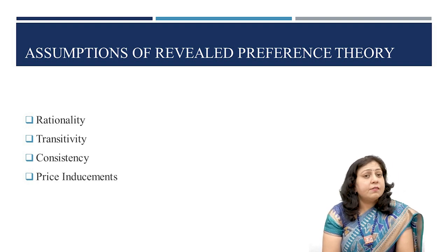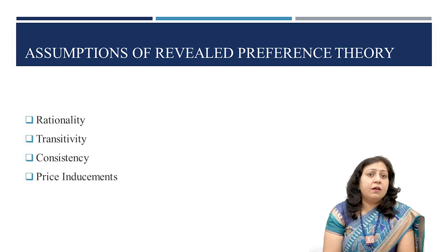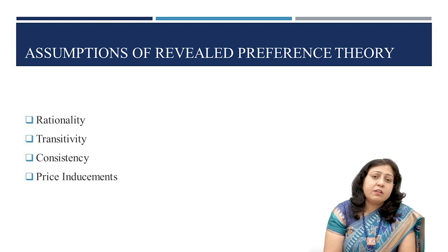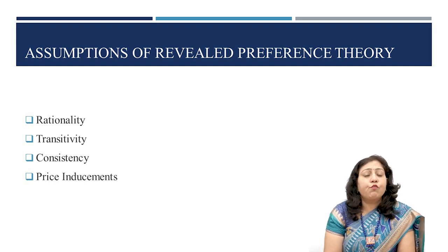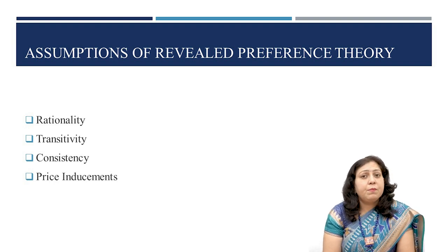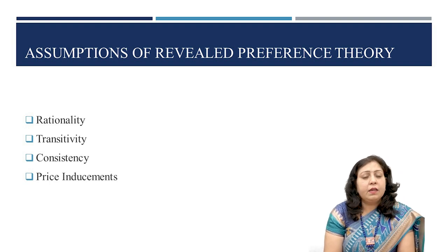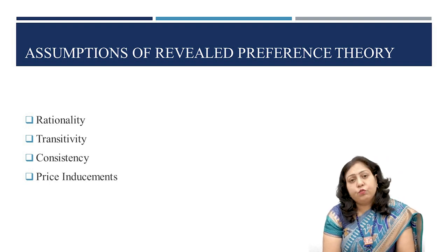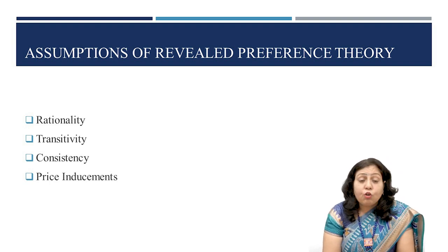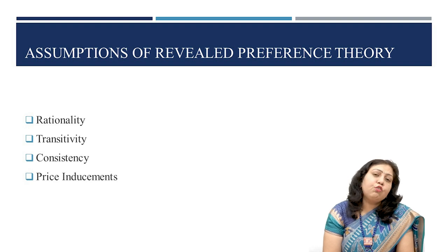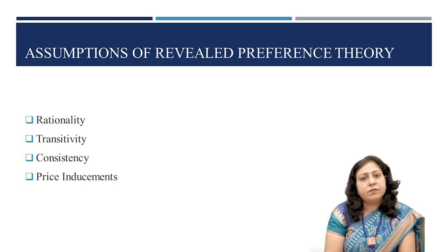Given the alternative baskets of goods A, B, and C, if he or she prefers A over B and B over C, then logically he or she shall prefer A over C. This assumption is about transitivity.